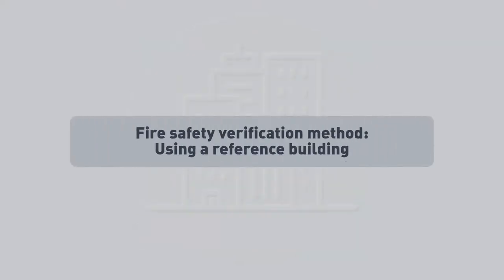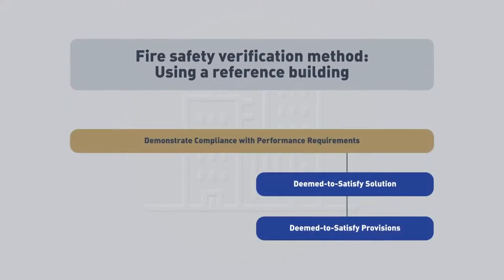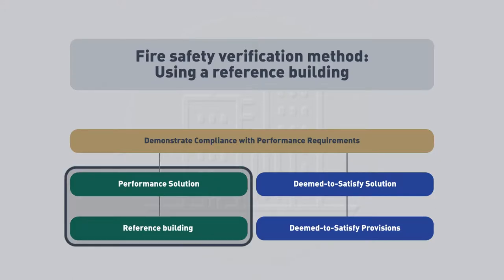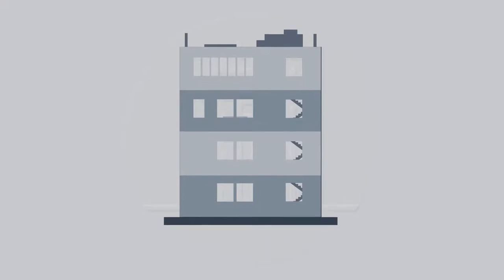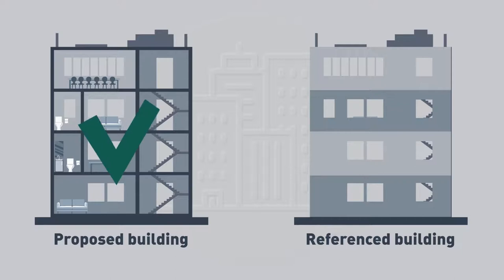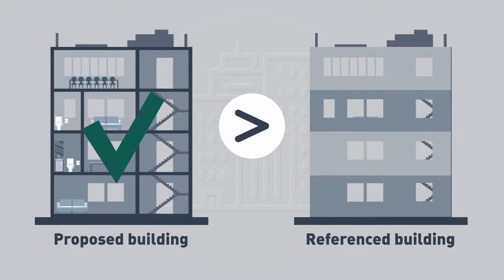All scenarios need to be compared to a reference building that complies fully with the DTS provisions, to verify that the proposed performance solution complies with the relevant performance requirements through equivalence with the DTS provisions. The design of the reference building should be as close as possible to that of the actual proposed building that the verification method is being applied to, and in full compliance with the DTS provisions. The performance solution for the proposed building needs to be equal to or better than the DTS-compliant reference building, providing a benchmark for comparing the performance solutions being verified.